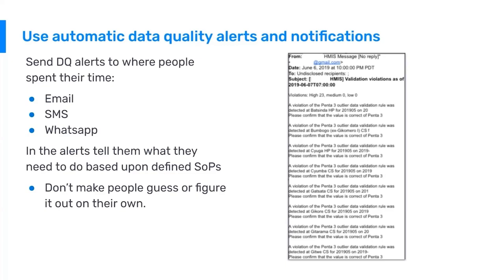You can see an example of that here on the screen. This is an automatic email generated by DHIS-2 sent to a user, and it's giving you all of the validation notifications that have been automatically detected. You can see quite a lot being sent in this single email.